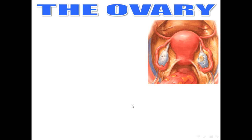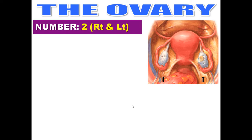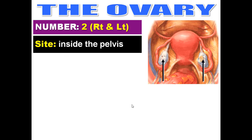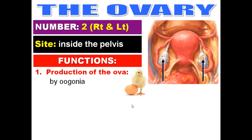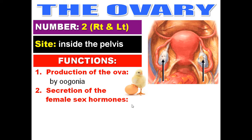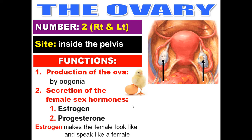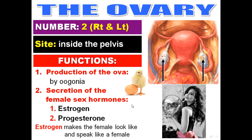There are two ovaries present in the pelvis. The functions of the ovary are: number one, production of ova by oogonia; number two, production of female sex hormones — estrogen and progesterone. Estrogen is responsible for the external sex characters of the female. Progesterone is important for maintaining pregnancy.